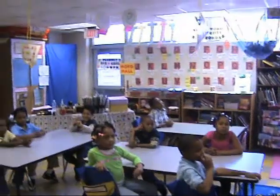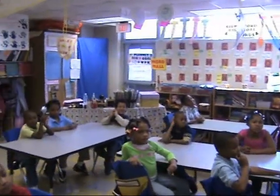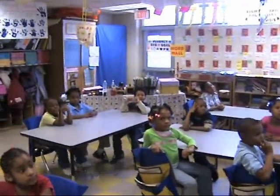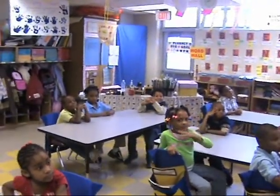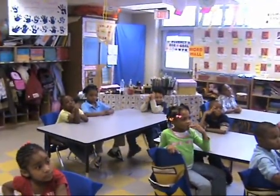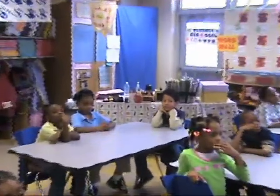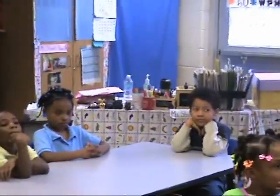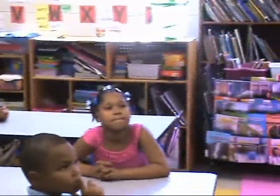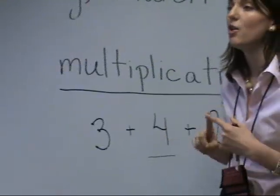Multiplication is just like adding. It's just like adding because we're going to take some numbers and add them together. We're going to take small groups of numbers, and these groups of numbers are going to have to be equal. Right now, I want us to use equal groups.